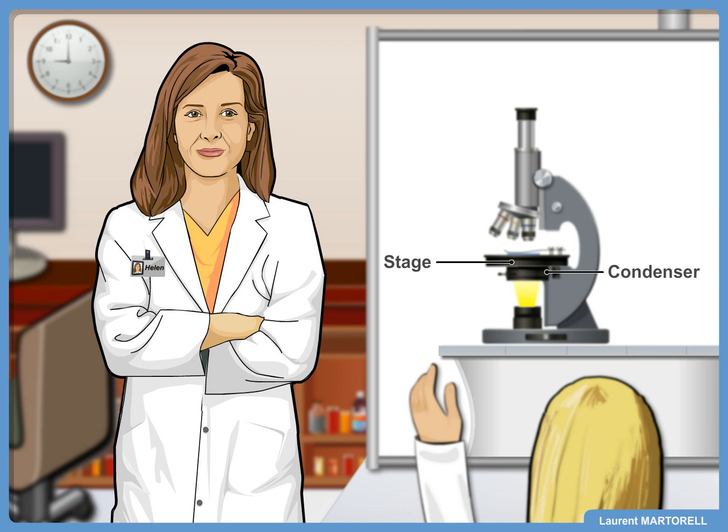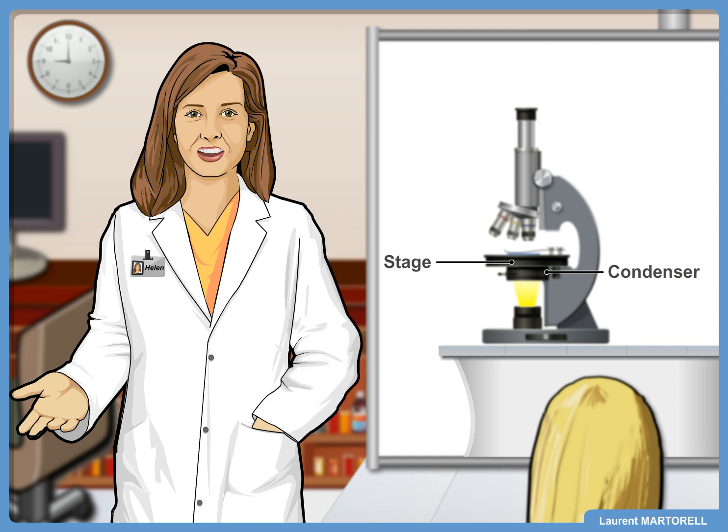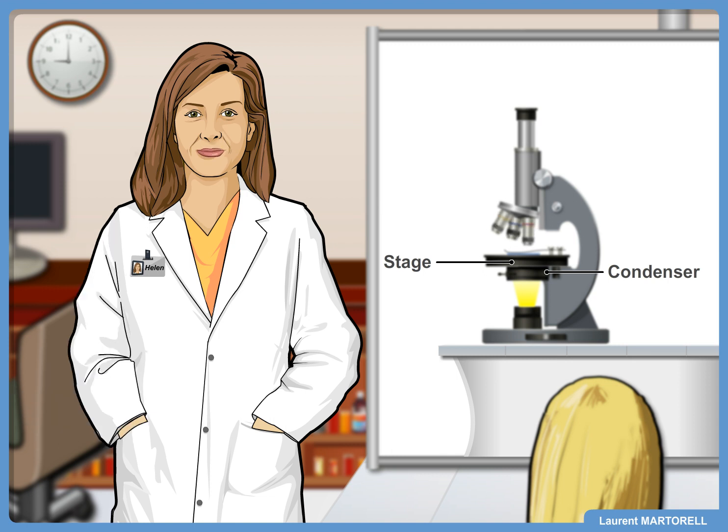To zoom in or out, revolve the nose piece—it means rotate the nose piece. This is how you can switch from one objective to another. Notice this is why the nose piece is called the revolving nose piece.